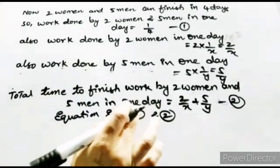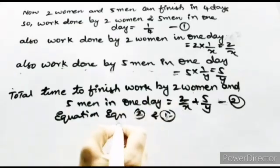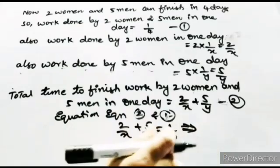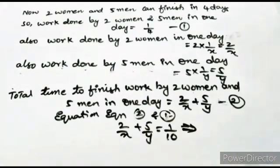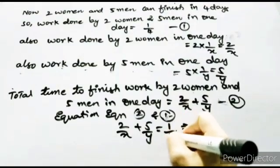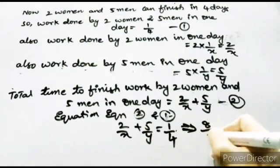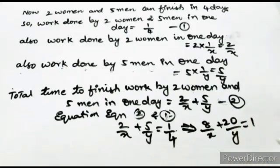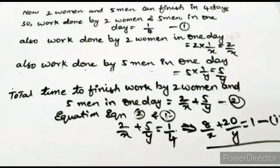Equating equation 1 and 2: 2/x + 5/y = 1/4. Cross-multiplying by 4, what value do you get? 8/x + 20/y = 1. Wait, correcting: the result after cross-multiplying gives 8/x + 4 — actually the first linear equation you get is: 8/x + 20/y = 1. This is your first equation.